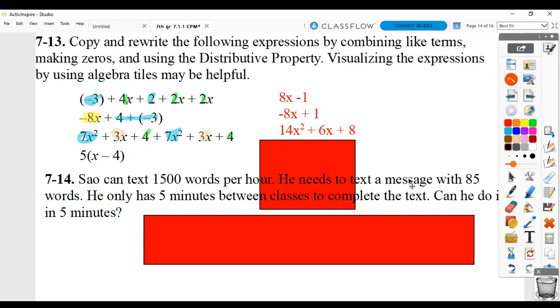The last one would be using the distributive property. So 5 groups of x minus 4 would be 5 times x, and then 5 times 4 with subtraction sign being maintained. So 5 times x is 5x minus 5 times 4 is 20.